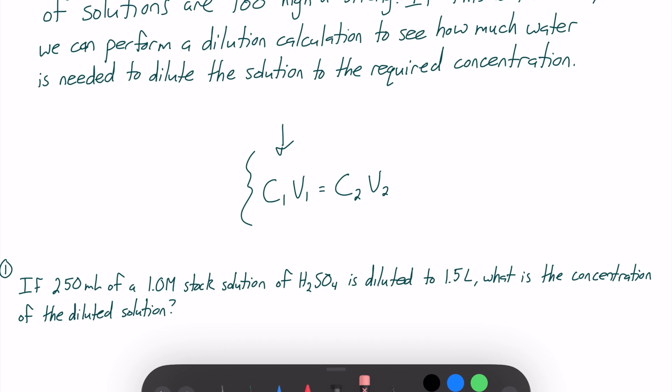Let's discuss what C1, V1, C2, and V2 mean. First up we have C1, which is our initial concentration of our solution. And V1 is our initial volume of solution.